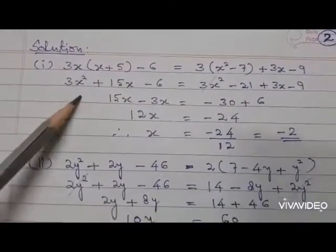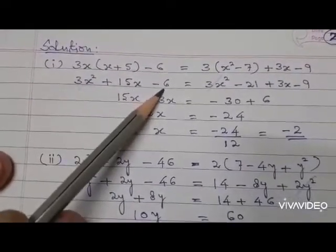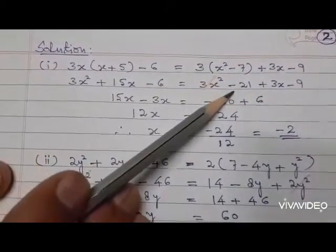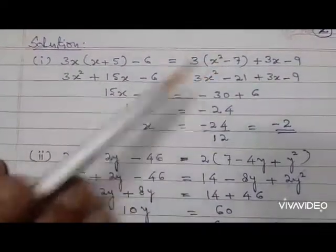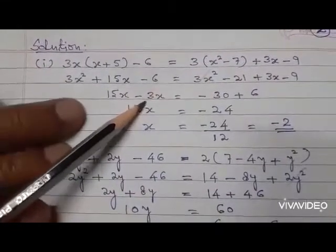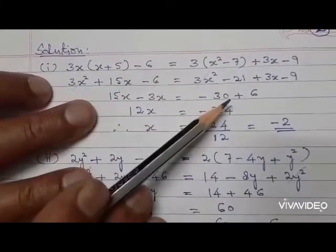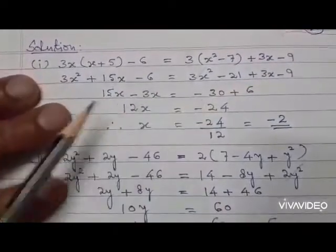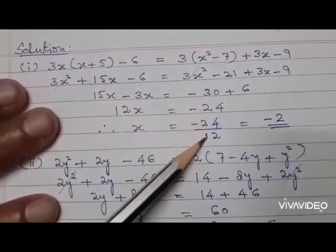The first question: 3x(x + 5) - 6 = 3(x² - 7) + 3x - 9. When we remove brackets we get 3x² + 15x - 6 = 3x² - 21 + 3x - 9. The 3x² cancels from both sides. Now we have only 15x on the left, bringing 3x to the left side. The constants go to the right, so -6 goes as +6. We get 12x = -24, so x = -24/12 = -2.